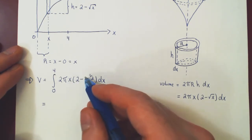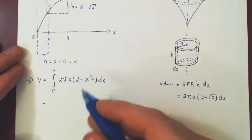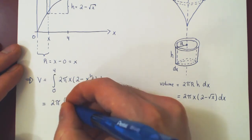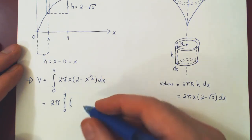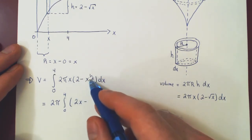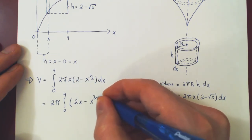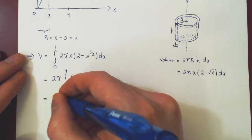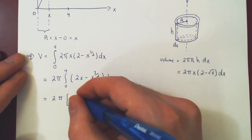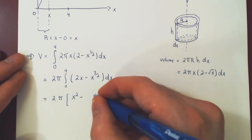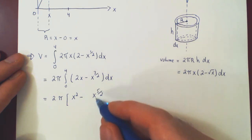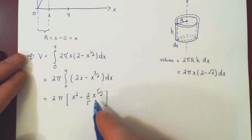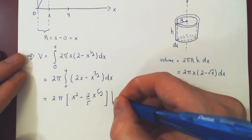We can't integrate yet since we have a product of two functions of x, but if we multiply through, the product goes away and we can use the power rule. Factoring out 2 pi as a constant multiple, and multiplying through gives 2x minus x times x to the one half, or x to the 3 halves. Now we can find the antiderivative using the simple power rule.